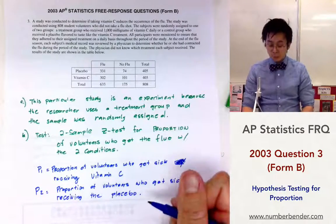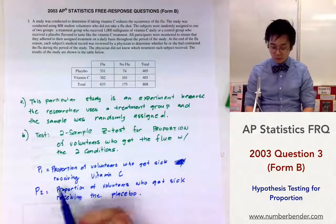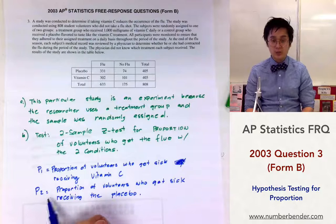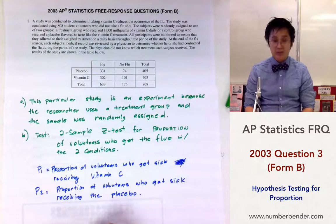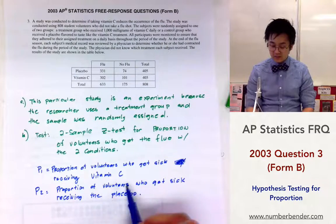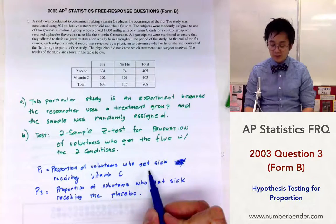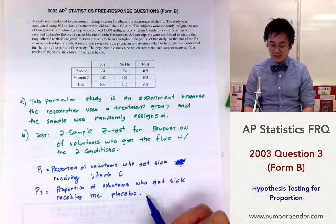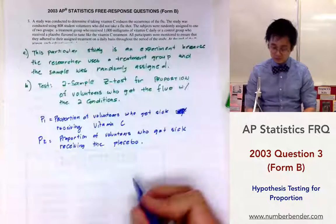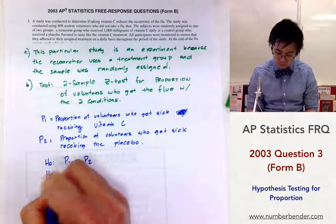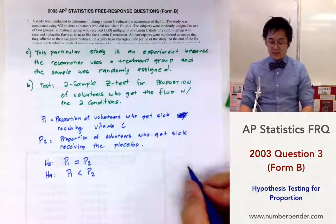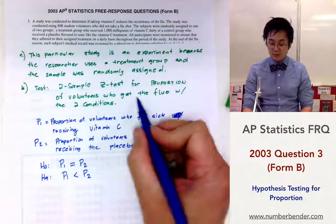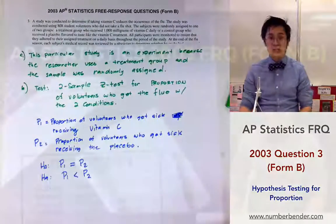These will be my two proportions. To write out my null hypothesis: p₁ is equal to p₂, which means there's no difference between the proportion of the two groups. The alternative hypothesis is that the proportion of people receiving vitamin C who get sick will be less than the proportion of people getting sick in the placebo group. This is how we carry out the test using the two-sample Z-test for proportions with the null and alternative hypothesis.